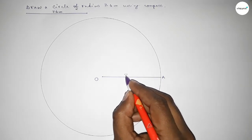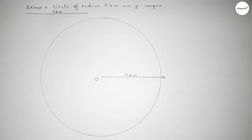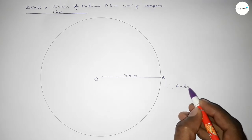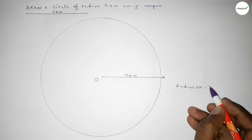So taking here point A, so OA is 7.6 centimeter. Therefore radius OA, radius OA equal to 7.6 centimeter.